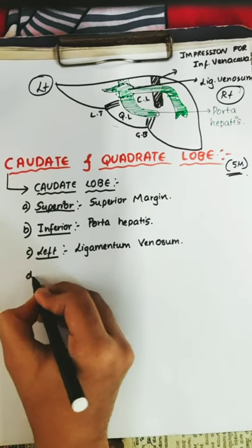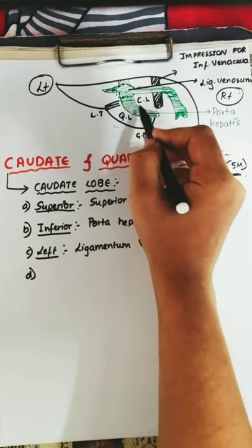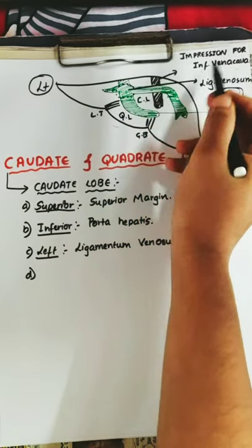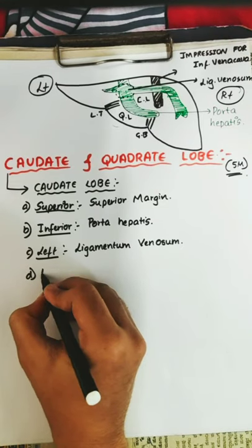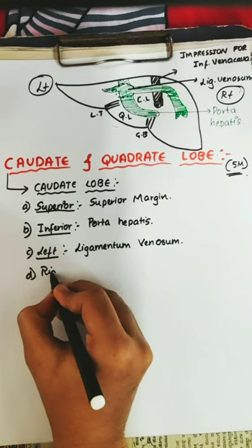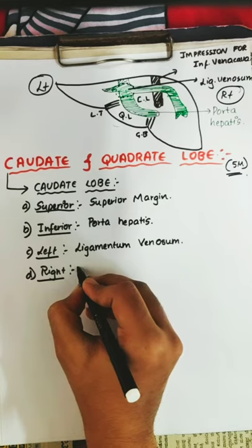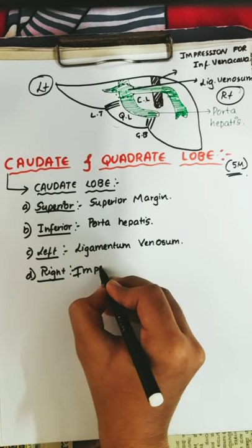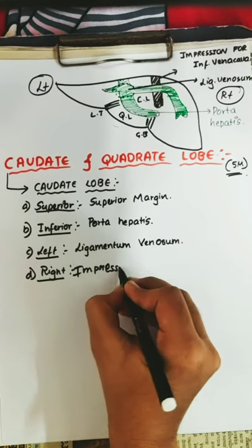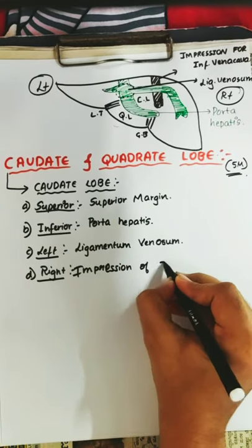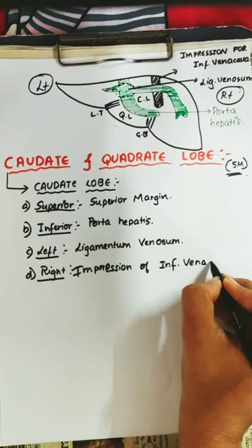And on the right side of the caudate lobe, you can see there is an impression of the inferior vena cava. So on the right side there is an impression of the inferior vena cava.